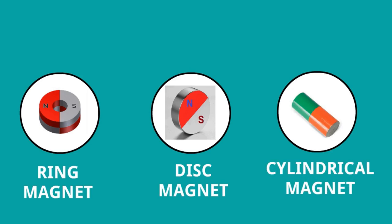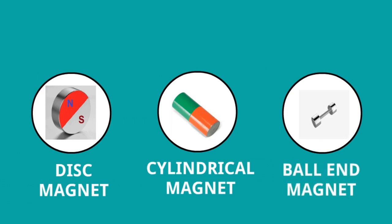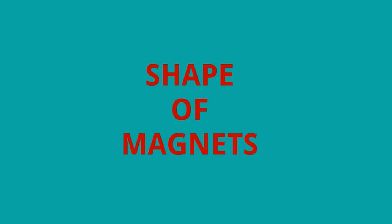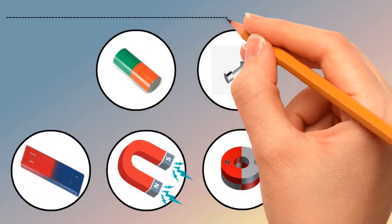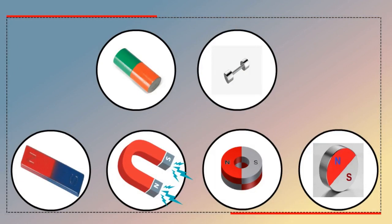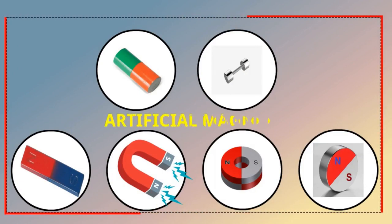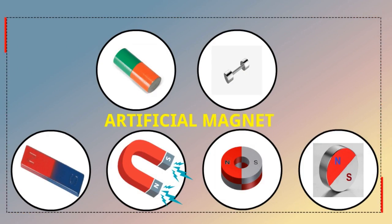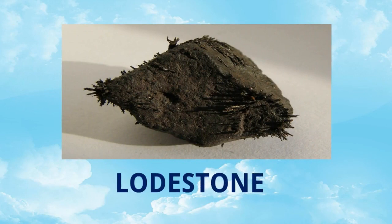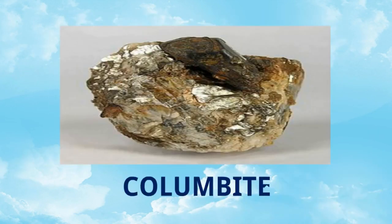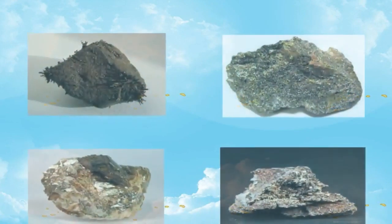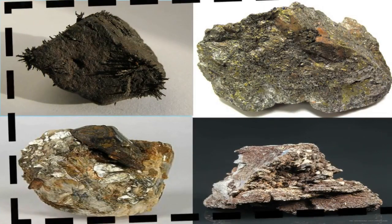Cylindrical magnet — this shape is just like a cylindrical. And ball-end magnets — both sides are just looking like a ball, so it is called ball-end magnets. Now, these are simply the shapes of magnets. All the magnets we have discussed are created by human beings, so we can simply call them artificial magnets.